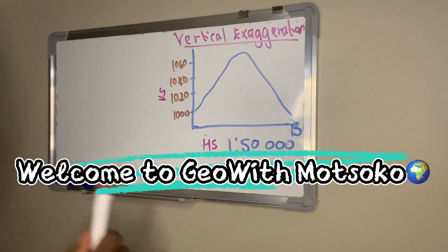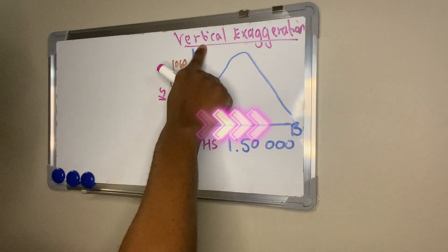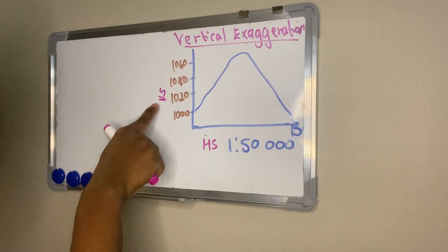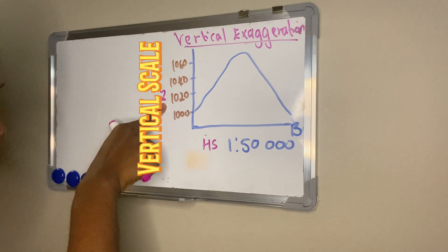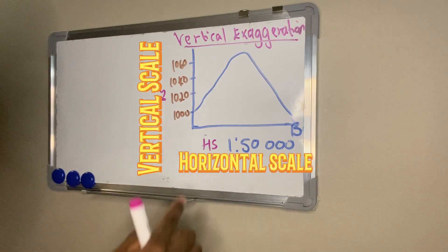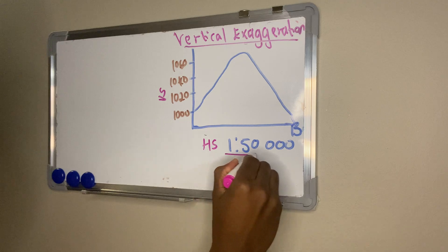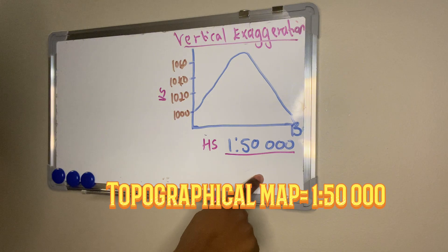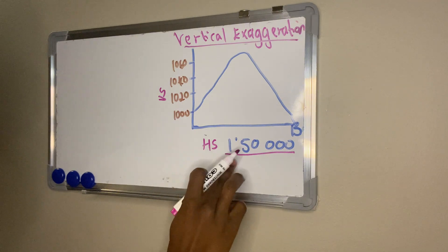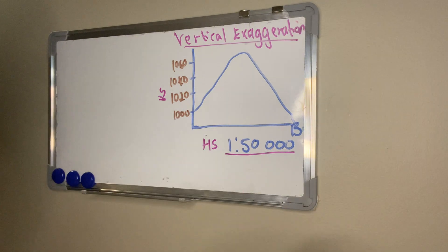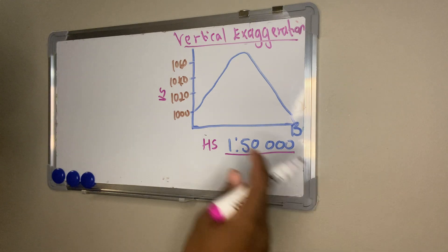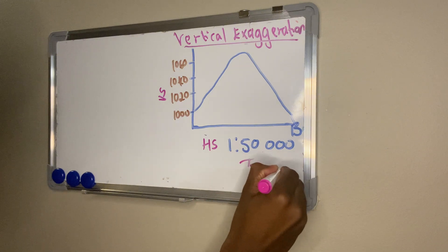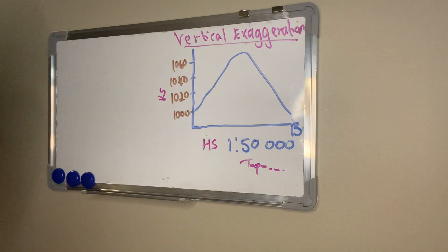Welcome to GeoMotogo. In today's video we're covering the topic of vertical exaggeration. For this calculation we're looking at how much the vertical scale has been exaggerated. We have two scales: vertical scale (VS) and horizontal scale (HS). The horizontal scale is the map scale — in this case we are using a topographical map with a scale of 1 to 50,000.